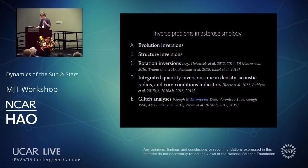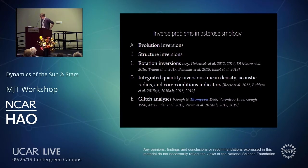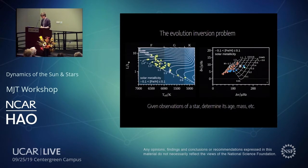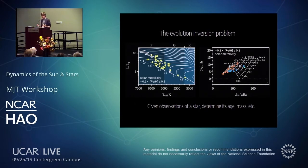In asteroseismology there are many different inverse problems. I'll focus on structure inversions, and just briefly mention the others: rotation inversions, integrated quantity inversions — starting with Daniel Reese's PhD work under Mike Thompson in Sheffield, continued by Gail Bulgin — glitch analysis, and evolution inversions. Evolution inversions are clearly inverse problems: we have stellar evolution theory as the forward model, and when we observe a star, we interpret observations in the context of that theory.